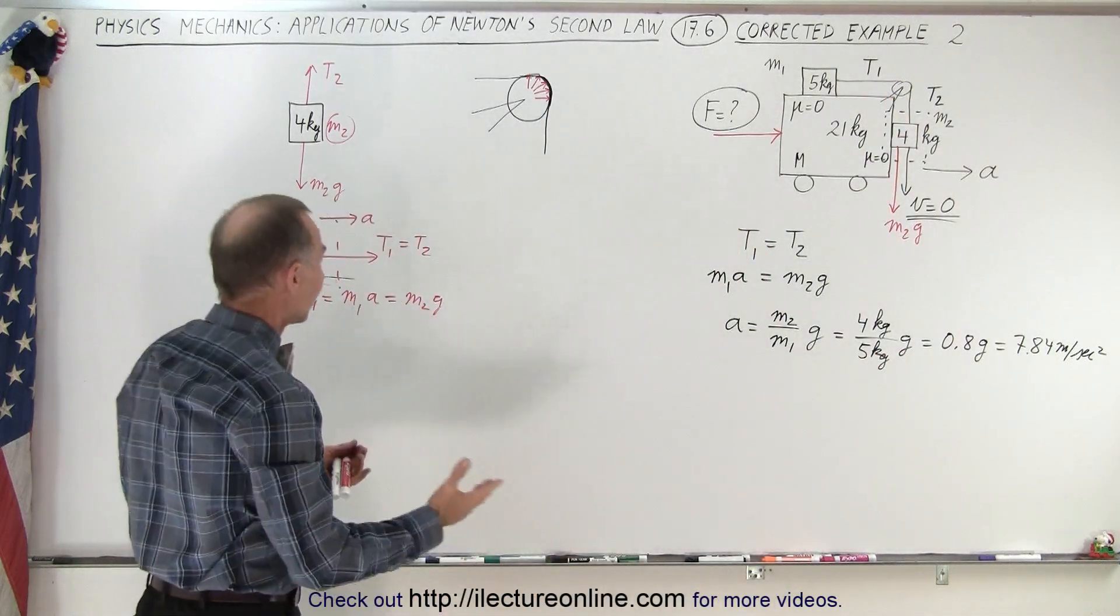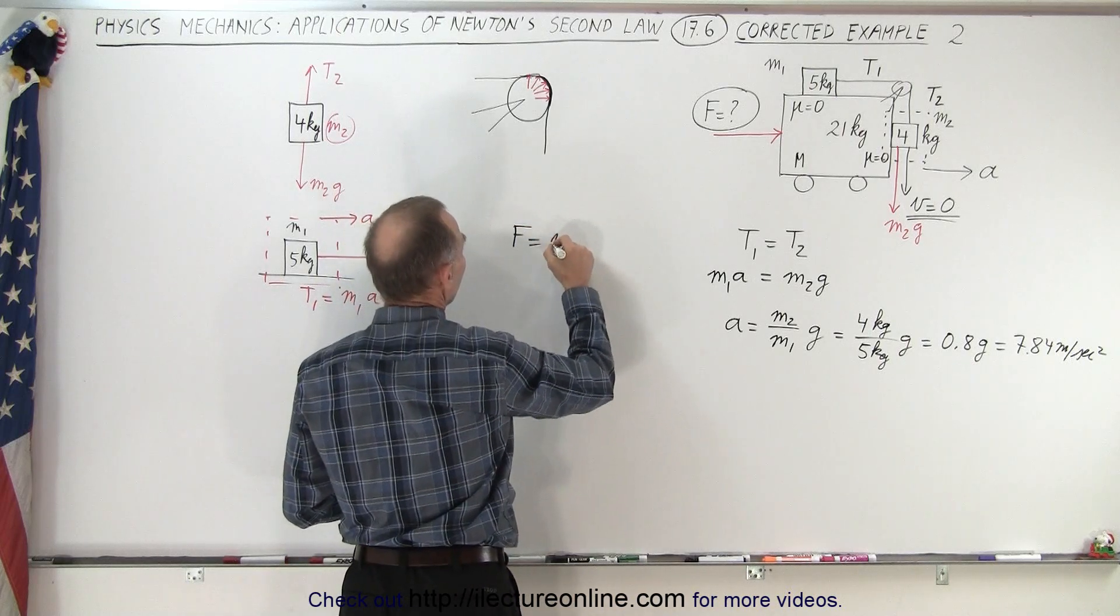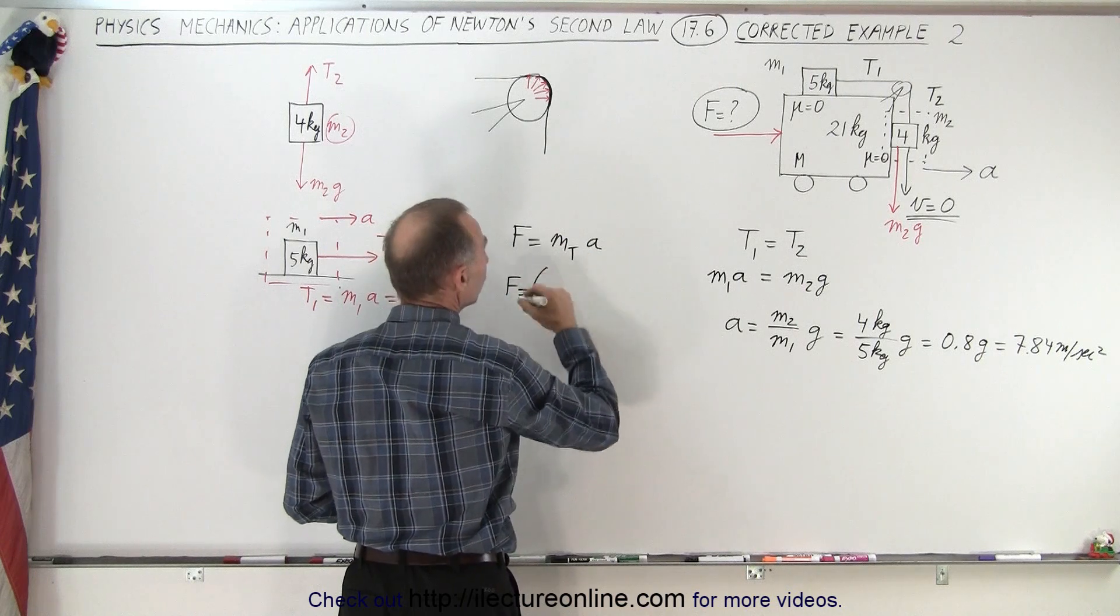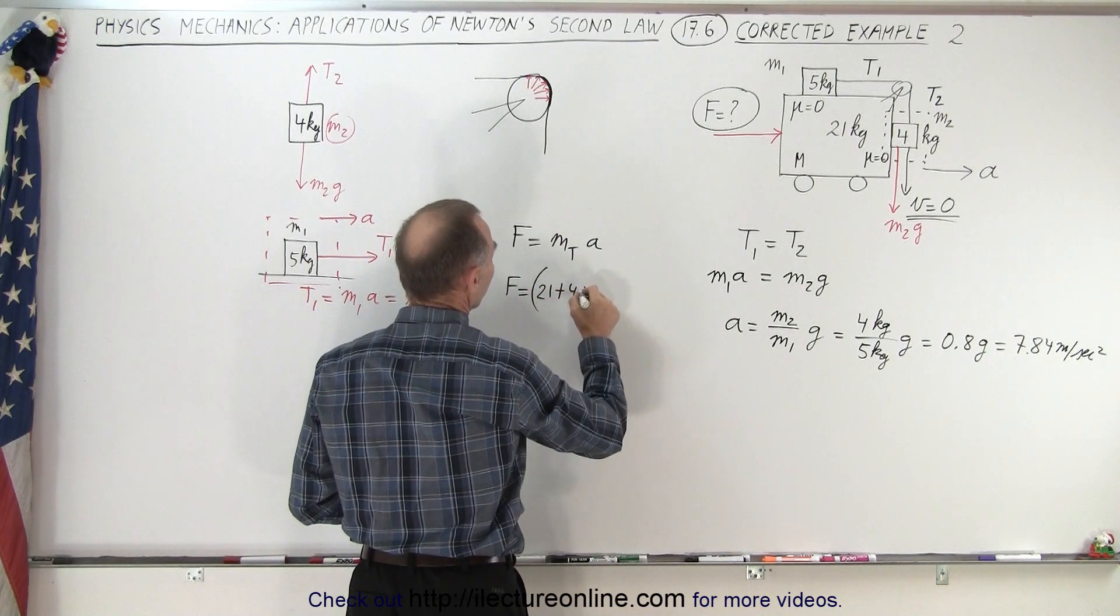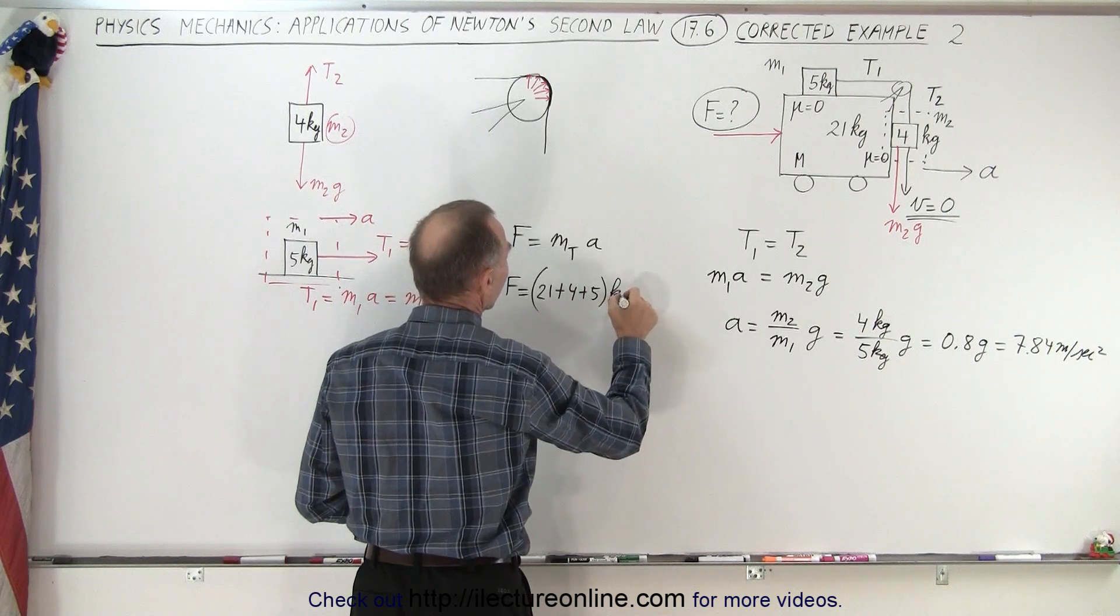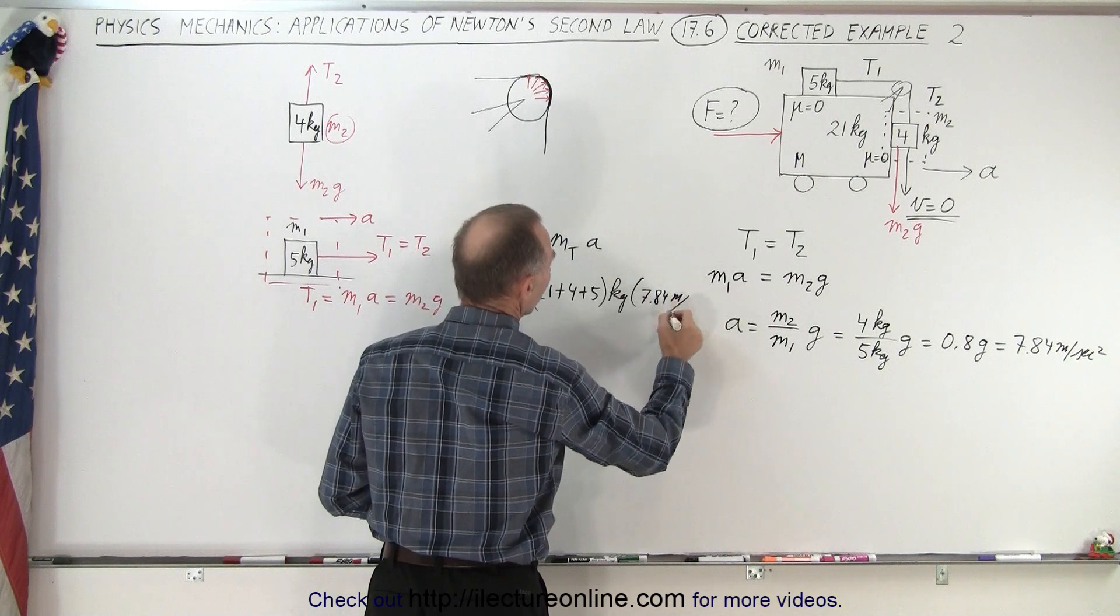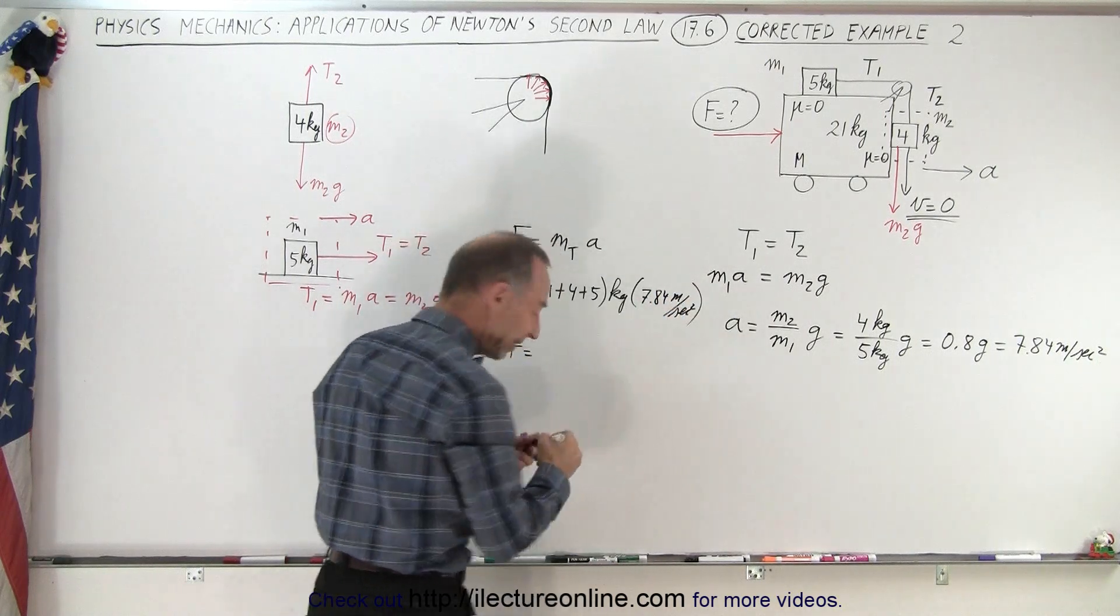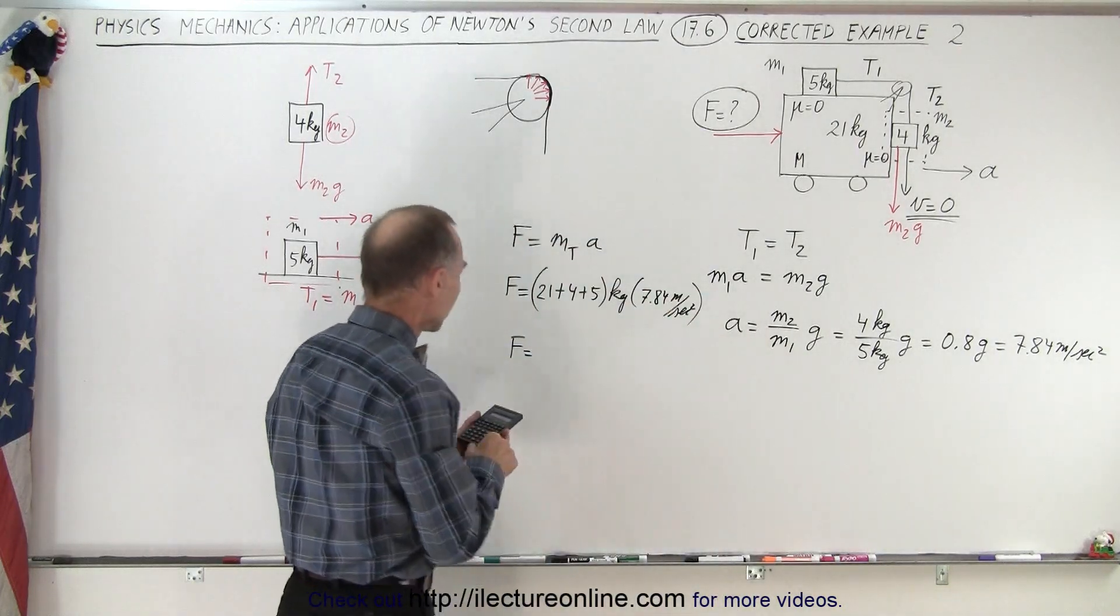Therefore we can now say that the force applied is equal to the mass total times acceleration. In this case, force is equal to the sum of all the masses: 21 plus 4 plus 5 kilograms, multiplied times acceleration of 7.84 meters per second squared.